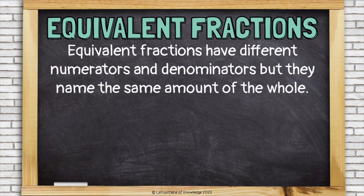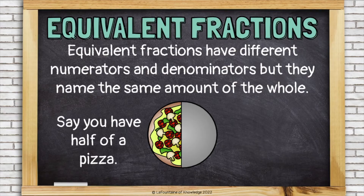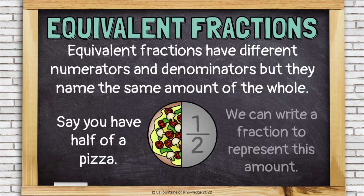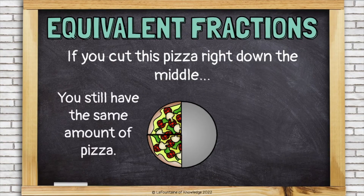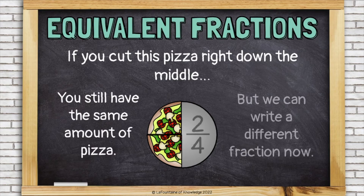Equivalent fractions have different numerators and denominators, but they name the same amount of the whole. Say you have half of a pizza. We can write a fraction to represent this amount: one-half. If you cut this pizza right down the middle, you still have the same amount of pizza, but we can write a different fraction now — two-fourths, because now our pizza was cut into fourths instead of halves.